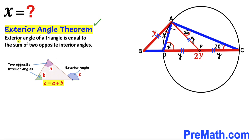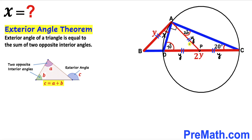Now let's recall the exterior angle theorem: the exterior angle of a triangle equals the sum of the two opposite interior angles. In triangle APC, the exterior angle at P is equal to the sum of the two opposite interior angles, both of which are 20 degrees. Therefore, angle APB equals 20 plus 20, which gives us 40 degrees.